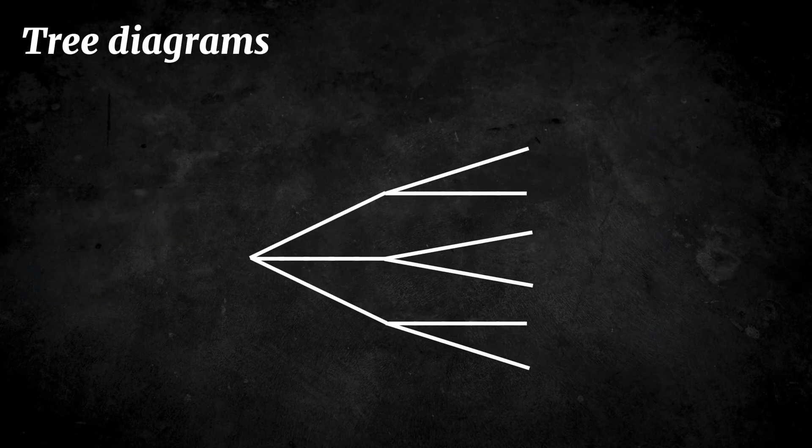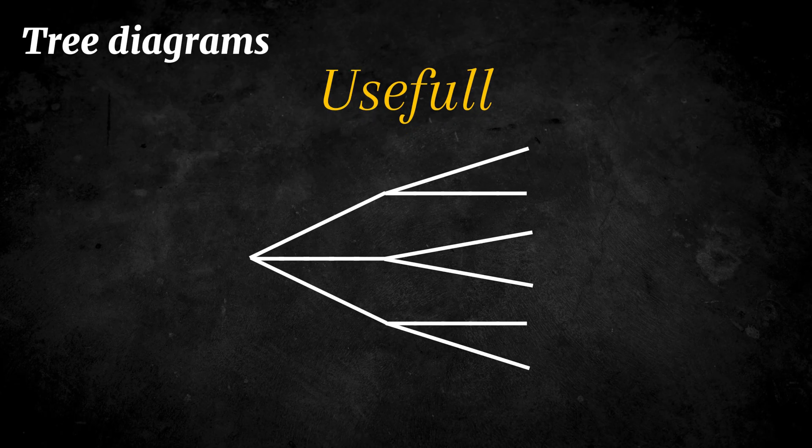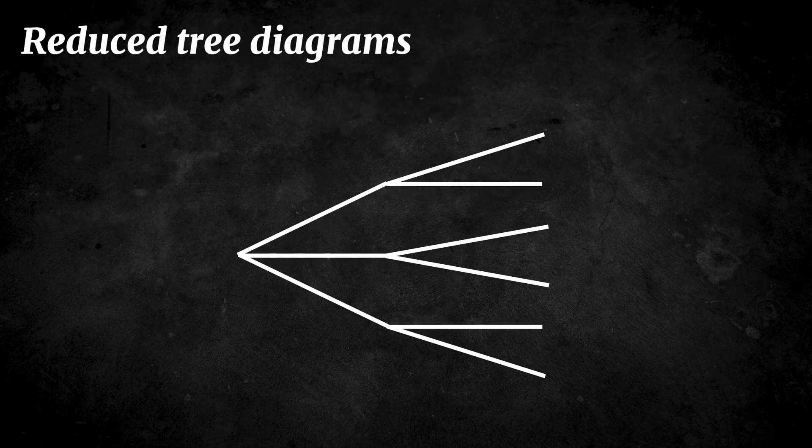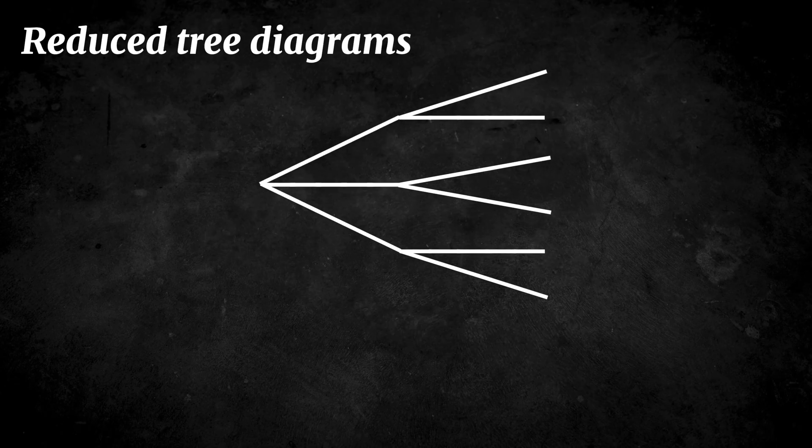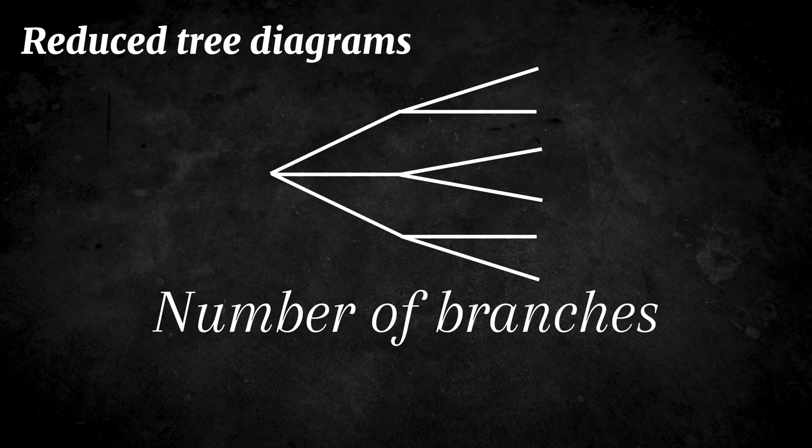Tree diagrams are especially useful because they make abstract counting very concrete and easy to follow. Sometimes, however, tree diagrams can become very large and complicated. In that case, we often simplify them by focusing only on the number of branches at each level rather than drawing every single outcome. Let me show you what I mean.